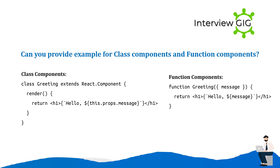Can you provide examples for class components and function components? Class component example: class Greeting extends React.Component { render() { return <h1>Hello</h1>; } }. Function component example: function Greeting() { return <h1>Hello</h1>; }